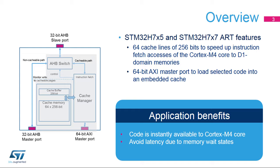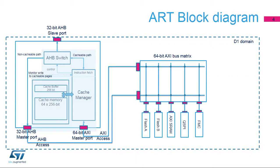The acceleration is achieved by loading selected code into an embedded cache and making it instantly available to the Cortex-M4 core, thus avoiding latency due to memory wait states. This figure shows the block schematic and the environment of the ART accelerator.